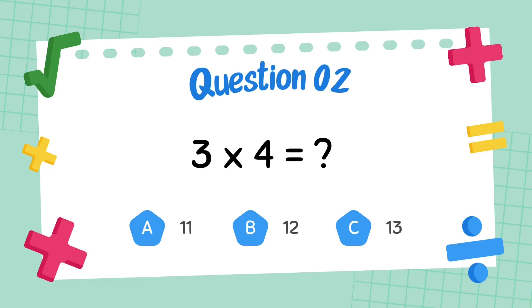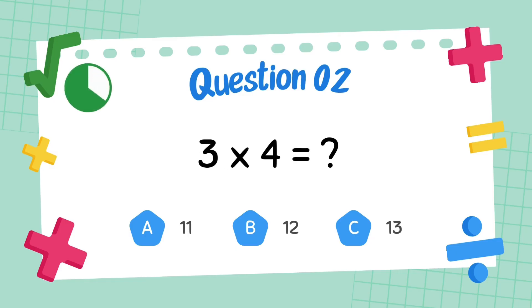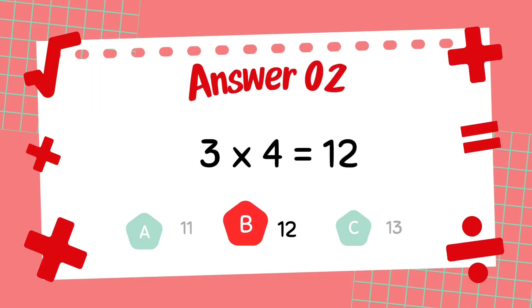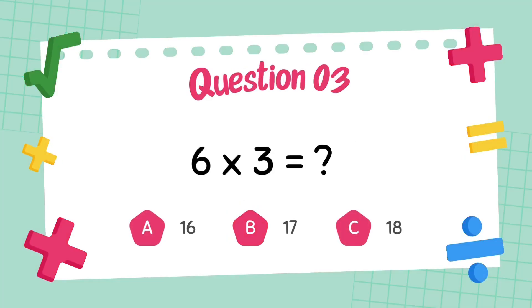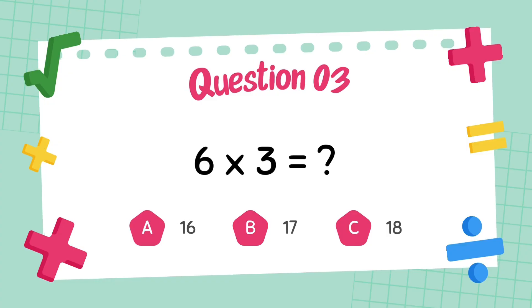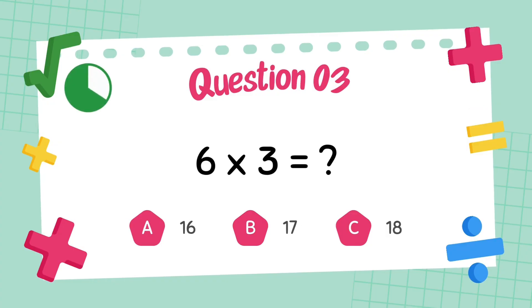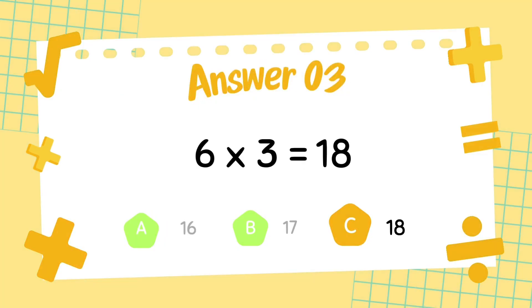What is 3 multiply 4? The answer is 12. What is 6 multiply 3? The answer is 18.